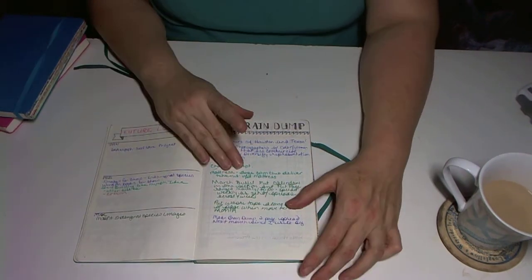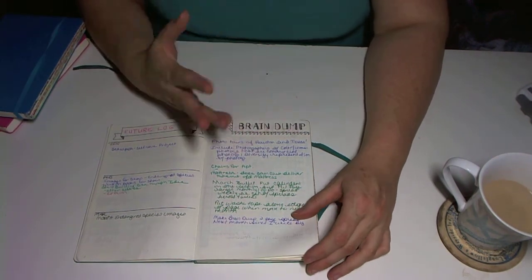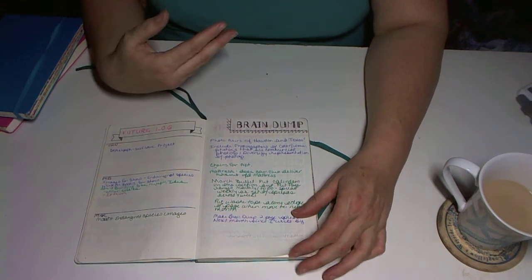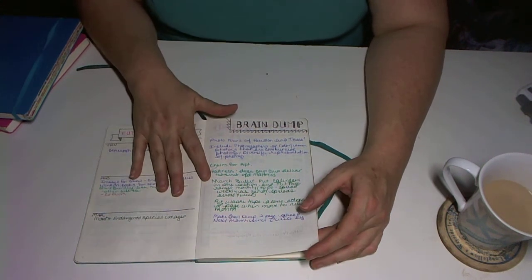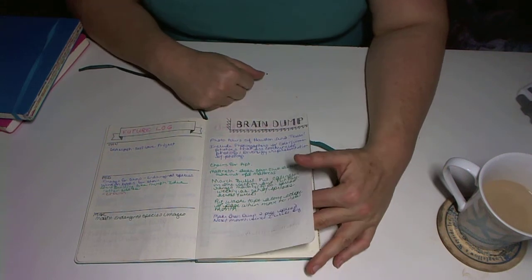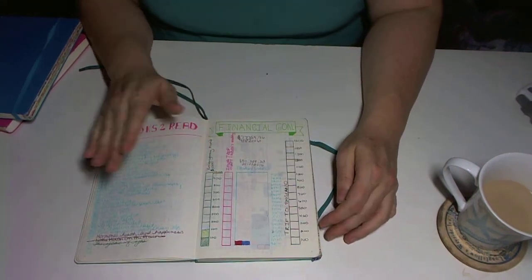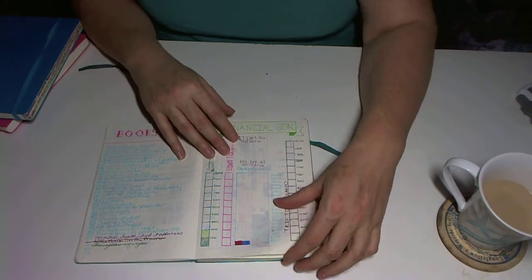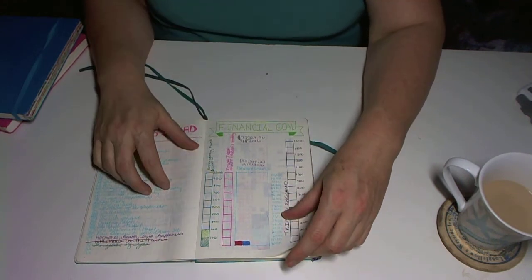I've got some future logs. I've got brain dumps. This is just stuff that I think about that I want to get out but I don't want to forget. I do a lot of brain dumps in here, but I don't label the pages this way on every single one. Then these are some goals, some financial goals. These are books that I want to read.